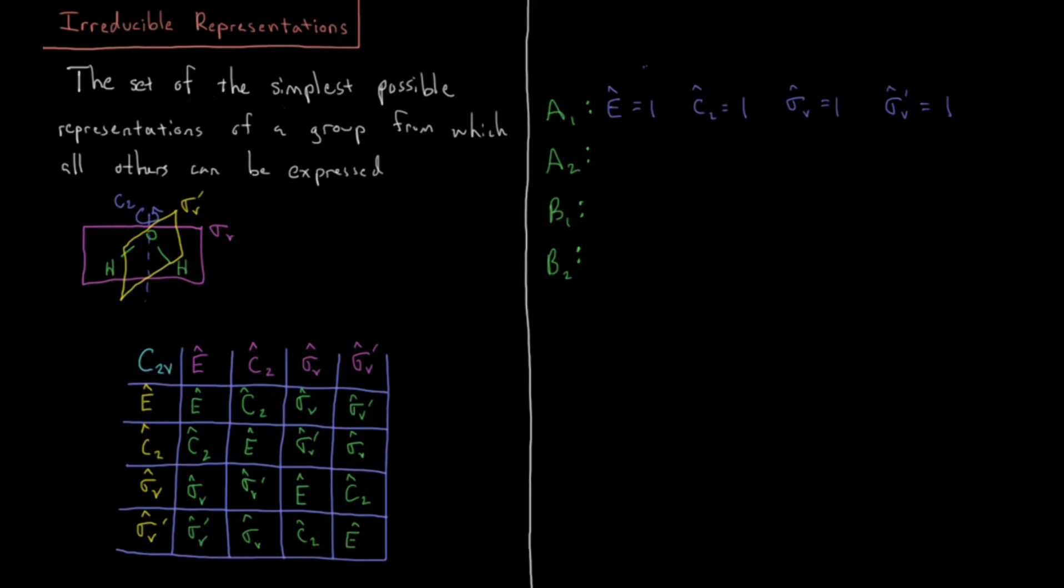That seems fairly trivial. But you could also do another representation of these where we have E equals 1, C2 equals 1, and then sigma V is minus 1, and sigma V prime is minus 1. Let's, for example, take sigma V times C2. Sigma V times C2, that should be sigma V prime. So minus 1 times 1 equals minus 1, which is sigma V prime. So in the same way, this group multiplication table will be correct for this A2 irreducible representation.